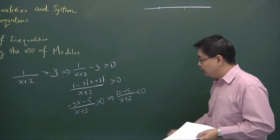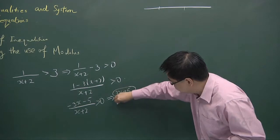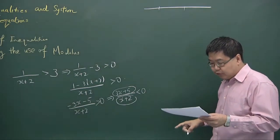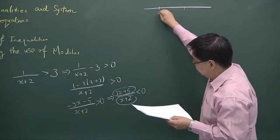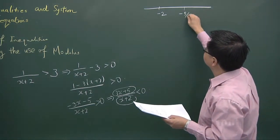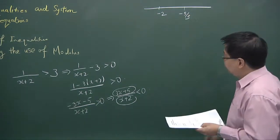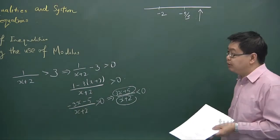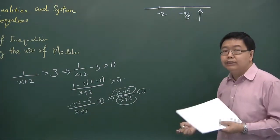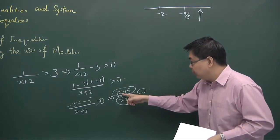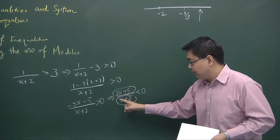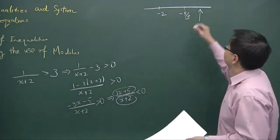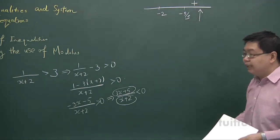We mark the two points that make the numerator and denominator zero: x equals negative 5 over 3 and x equals negative 2. Substituting x equals 0 into the numerator gives 5 and into the denominator gives 2, so the result is 5 over 2, which is positive. We place a plus sign in that region.